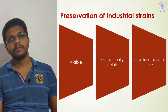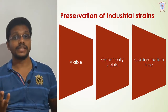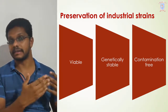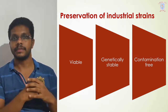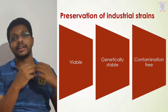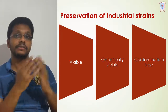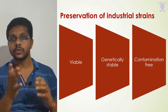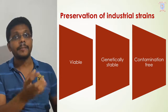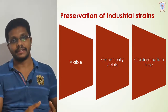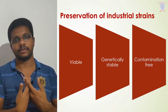The second objective is genetic stability. During the time of preservation, the genetic characteristics of the microorganism should not change. There's a chance of change — if we culture a microorganism repeatedly in a particular type of medium, the microorganism gets acclimatized to that medium and its characteristics may change. If we are culturing it for many generations, it may change its characteristics. We have listed the ideal characteristics of an industrial strain, and after preservation those ideal characteristics should be maintained and should not be lost.